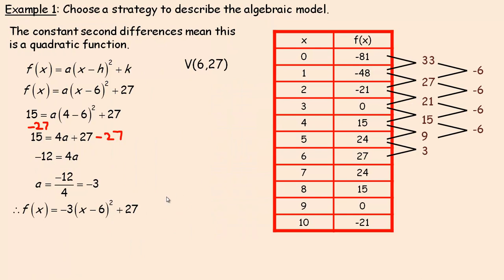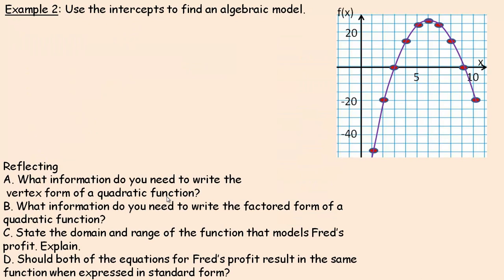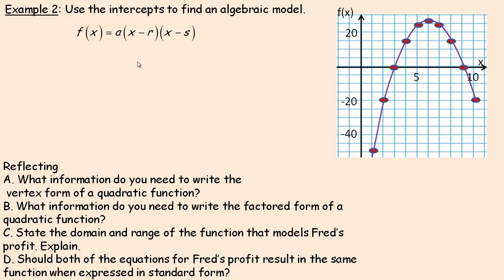On the next page we'll talk about factored or intercept form. Intercept form looks like f(x) = a(x - r)(x - s), where r and s (sometimes written as p and q) are the x-intercepts. From the data, the intercepts are at 3 and 9 — representing 300 and 900 hoverboards. I'll put 3 in place of r and 9 in place of s. This time I'll use the point (2, -21) to find A.